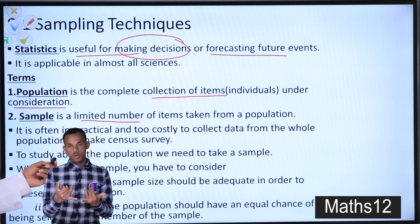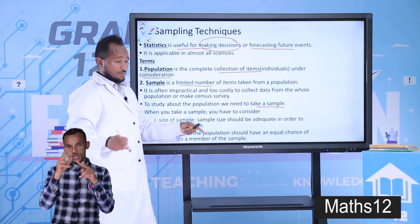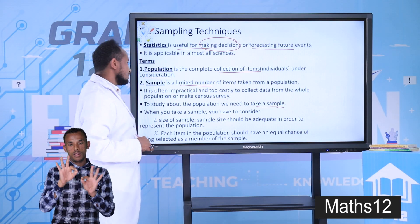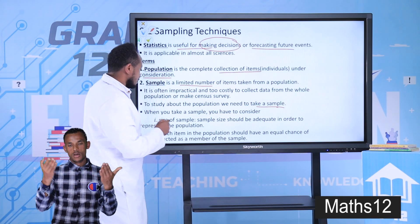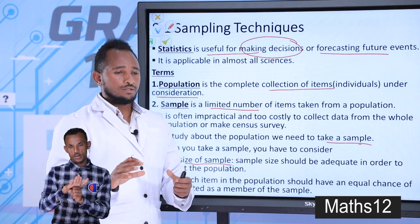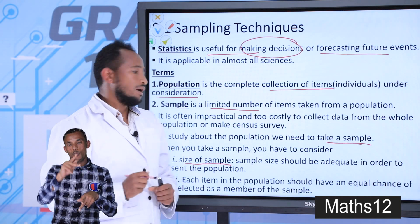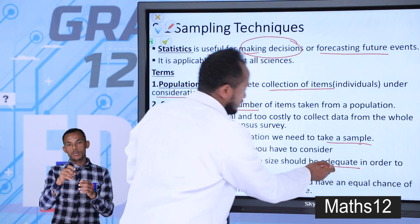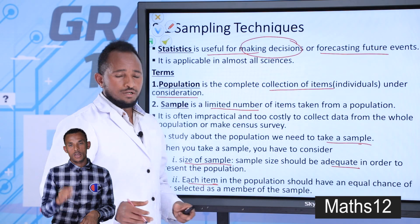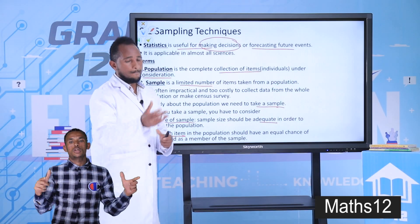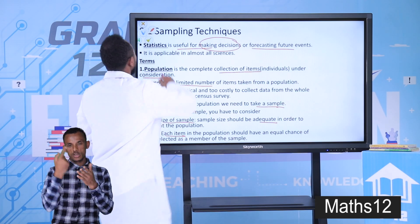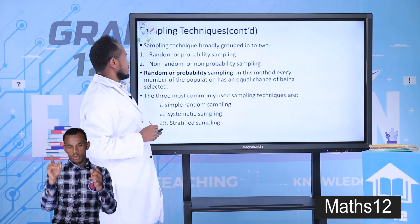To study the population, we need to take a sample. In this chapter, we will see how to take a sample — the techniques. When you take a sample, you have to consider two basic things: first, the sample size must be sufficient so that it represents the whole population; and second, each item should have an equal chance to be a member of the sample.